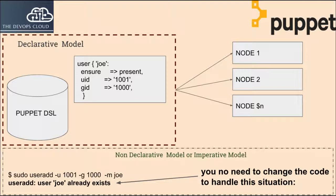Rather than writing extensive imperative code to handle every situation, it is much simpler to declare what you want the final state to be. Instead of including dozens of lines of comparison, the code reflects only the desired final state of the resource — a user account in this example. As you can see, the code is not much more than a simple text explanation of the desired state.